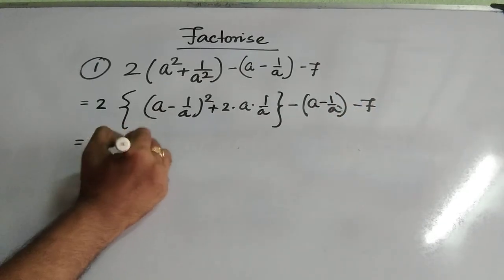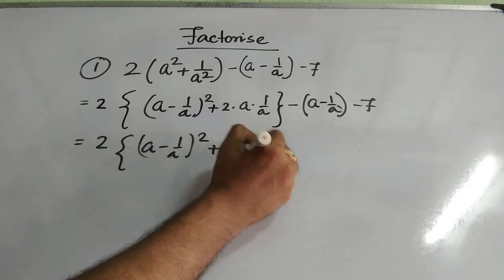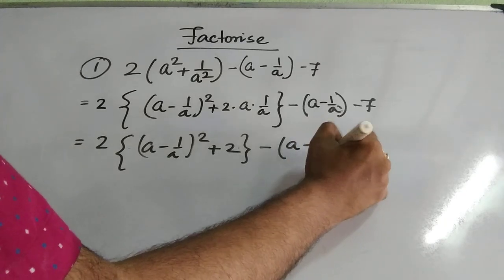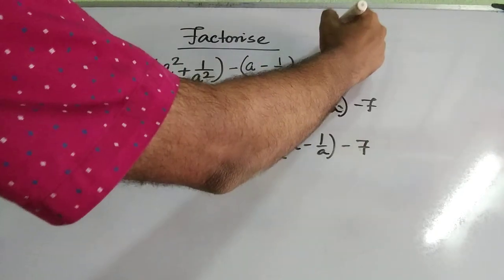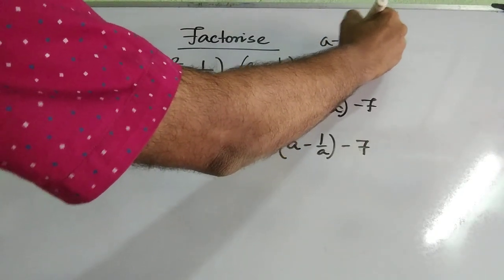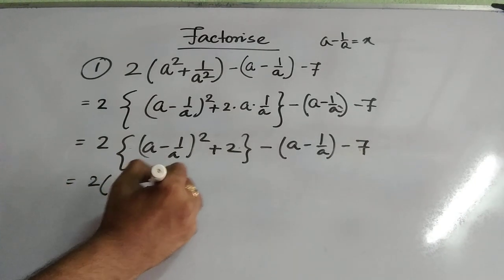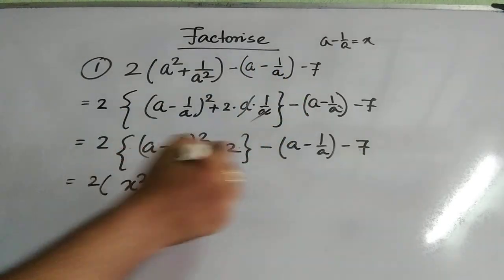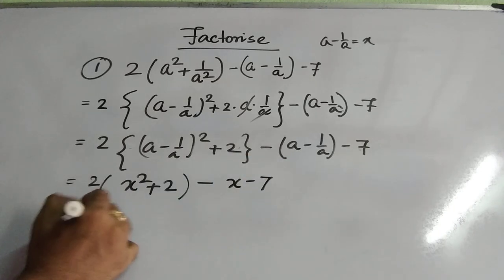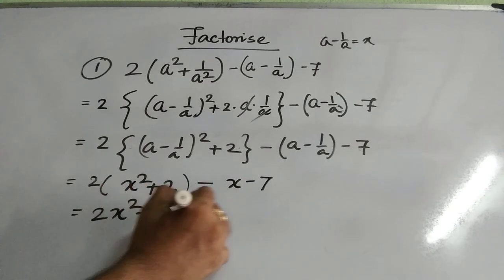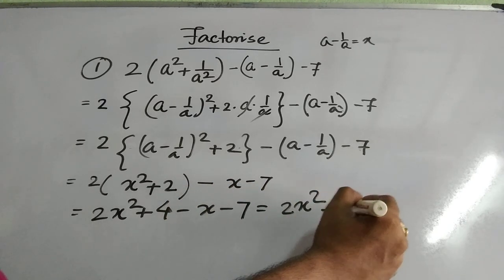This simplifies to 2·(a - 1/a)² + 2 - (a - 1/a) - 7. Now let me assume a - 1/a = x as a substitution. So it becomes 2x² + 2 - x - 7, which gives 2x² - x - 3.